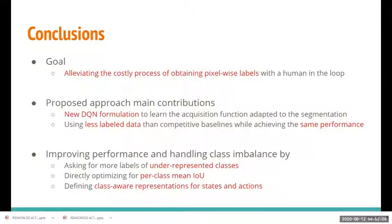In conclusion, this approach presents a solution to eliminate the need for manual pixel-level labeling, achieved through a new DQN formulation for learning an effective acquisition function, enabling the same performance as competitive baselines but using less labeled data. Three important factors explain why this works well: the approach asks for more labels of underrepresented classes, it directly optimizes for per-class mean intersection over union, and the definition of class over-representations for states and actions contributes substantially to its success. That's the end of the presentation — thanks for listening and I'm ready for your questions.